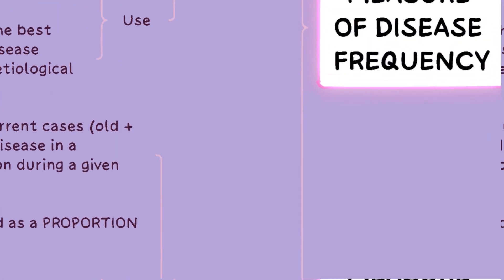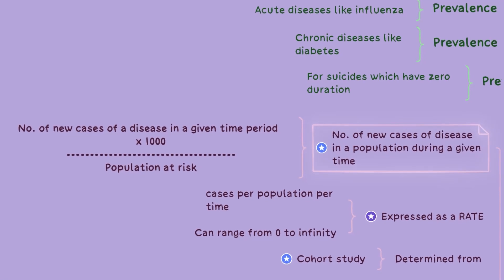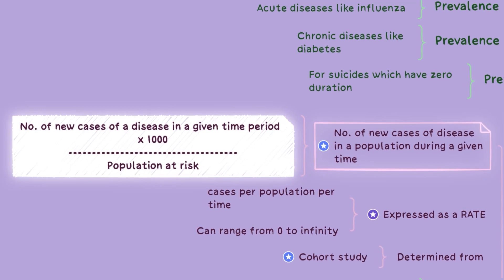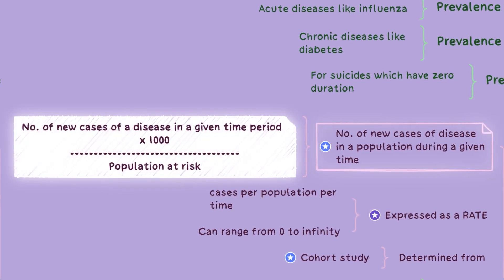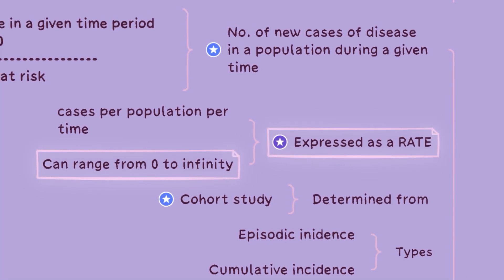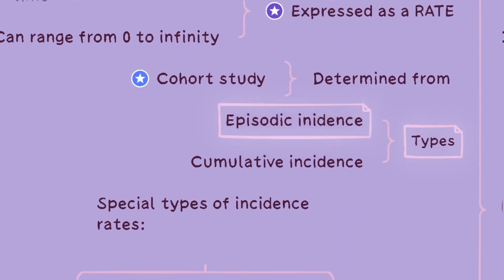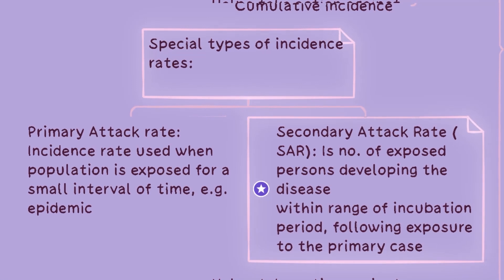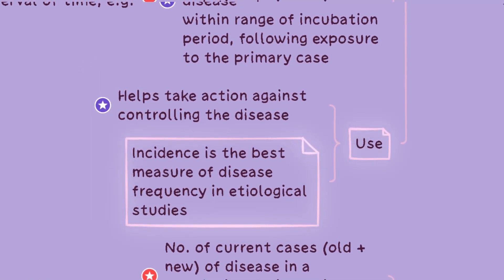Measurement of morbidity can be done by calculating incidence and prevalence, which can also be used as measures to determine disease frequency. Incidence measures the number of new cases of a disease or health condition that occur within a specific population during a defined time period. It is calculated by dividing the number of new cases by the population at risk and is often expressed per unit of population, e.g. per thousand or hundred thousand population — expressed as a rate. Incidence rates range from zero to infinity and are commonly used in cohort studies. There are two types of incidence: episodic and cumulative, as well as special types including primary attack rate and secondary attack rate. Incidence helps take action against controlling the disease and is the best measure of disease frequency in etiological studies.